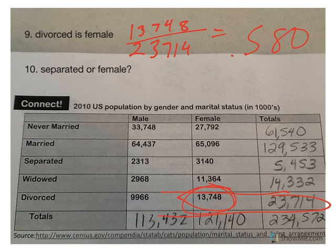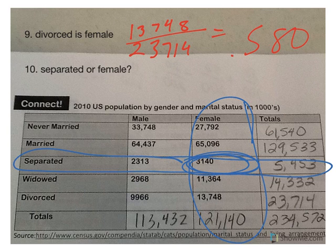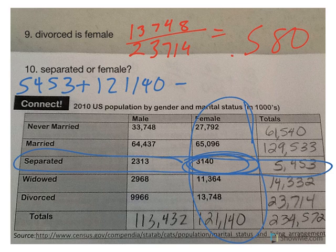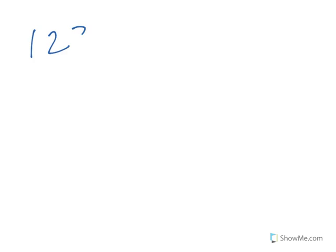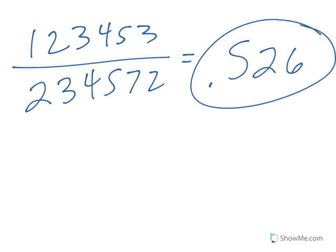Number ten: what is the probability someone is either separated or female? We have an overlap here. So if I take separated — 5,453 — add my females — 121,140 — and subtract the overlap of 3,140, I come up with 123,453 female or separated over my total of 234,572, for a decimal of .526. So 52.6% of people in the U.S. in 2010 were either separated or female.